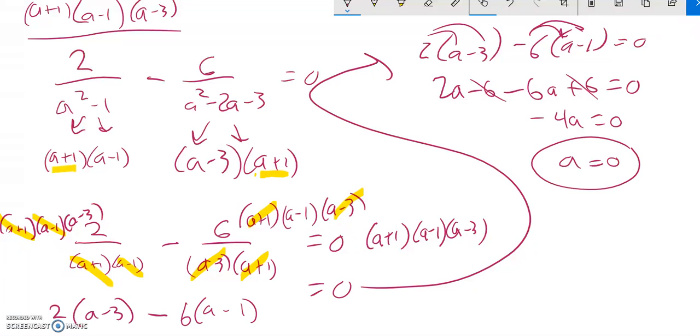Let me plug it back in and see if it works. So here is where I'm going to check it. 2 times 0 squared minus 1 minus 6 times 0 squared minus 2 times 0 minus 3. Does that equal 0? So this is 2 over negative 1 minus 6 over negative 3. So this would be negative 2 minus a negative plus 2. That does equal 0. It checks out.